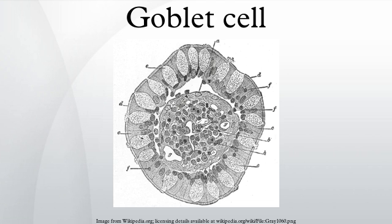Histology: the nuclei of goblet cells tend to be displaced toward the basal end of the cell body, leading to intense basophilic staining. In mucicarmine stains, deep red mucin is found within goblet cell bodies. Goblet cells can be seen in the examples below as the larger, more pale cells.